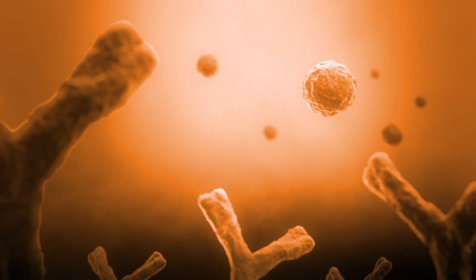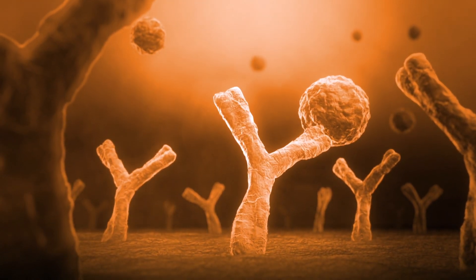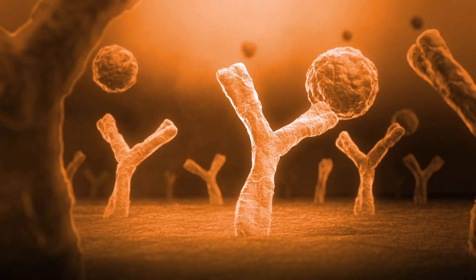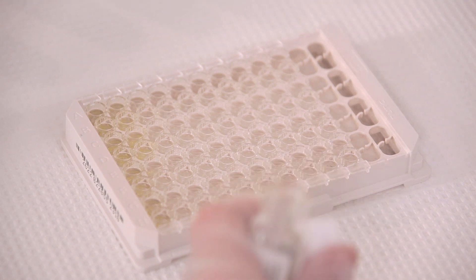Once the first incubation starts, insulin in the calibrators, controls, and samples will bind to the monoclonal capture antibody that is bound to the ELISA plate wells. The calibrators are yellow and can be seen clearly in the wells.